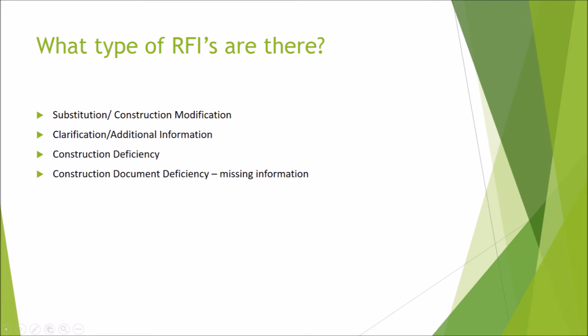The next topic covers the different types of RFIs you might encounter. The substitution RFI occurs during the bidding phase and is for a construction modification. An example of this would be to change a design drawing to make the project make more sense.